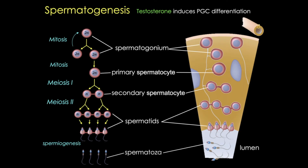Spermiogenesis takes place with no further divisions. Now, as you might expect, in a process this complicated, errors in differentiation are common. But as long as 50% of the spermatozoa in an ejaculate have normal morphology, fertility will not likely be impaired. We know that each cycle from primordial germ cell to spermatozoa takes about 64 days, and that successive waves of spermatogonia undergo these processes and mature into spermatozoa, happening pretty continuously in males from puberty to death.